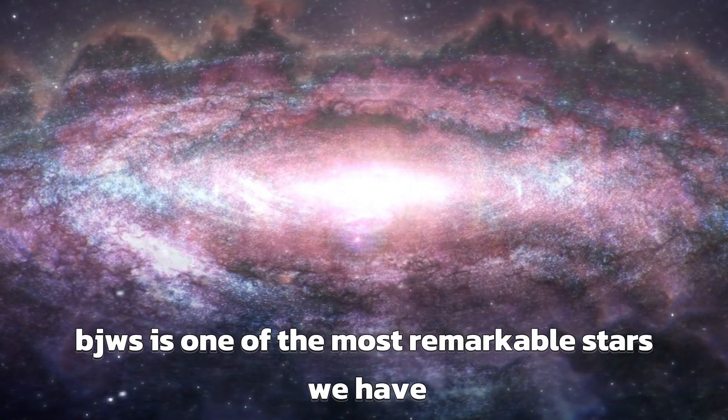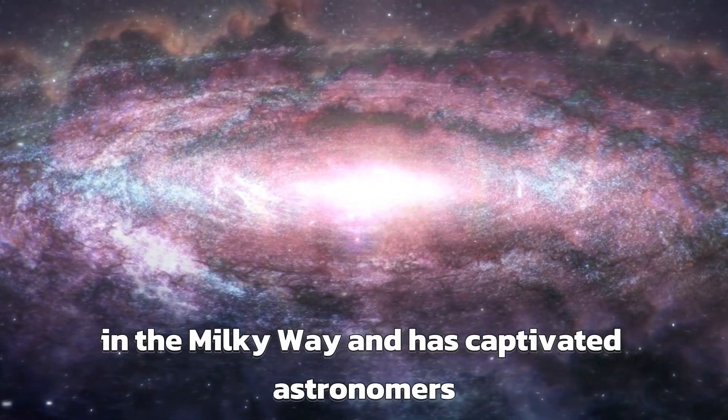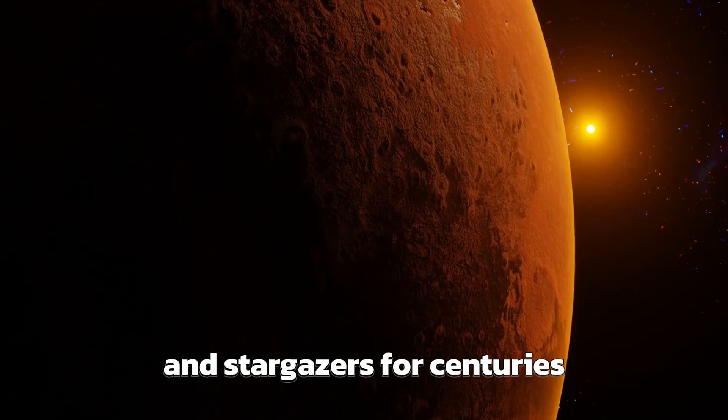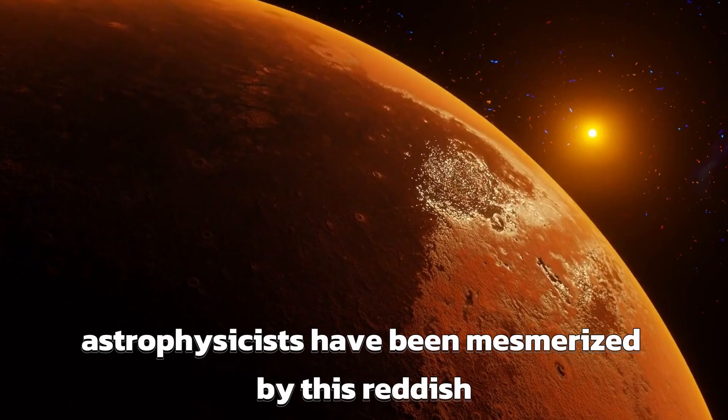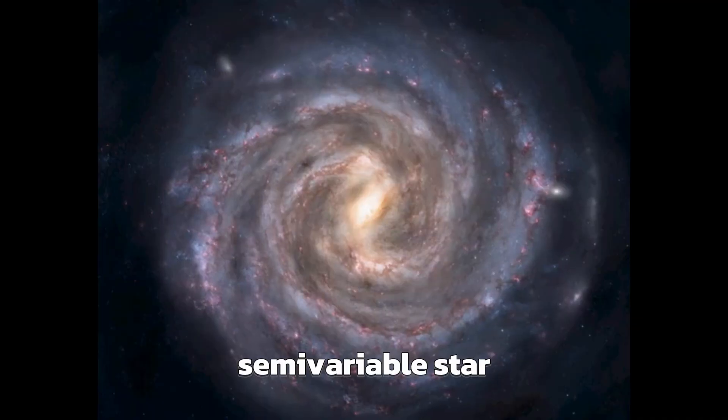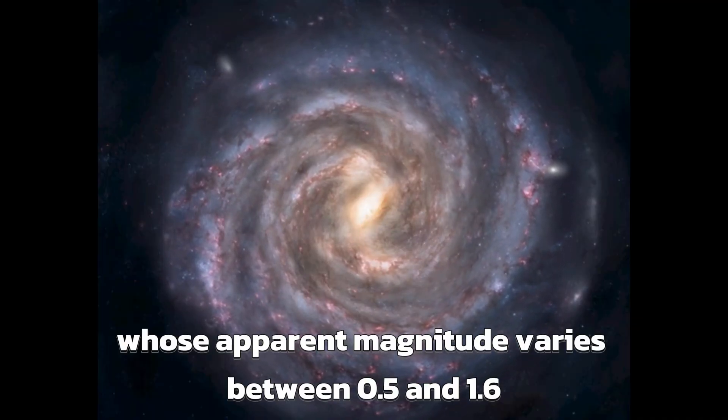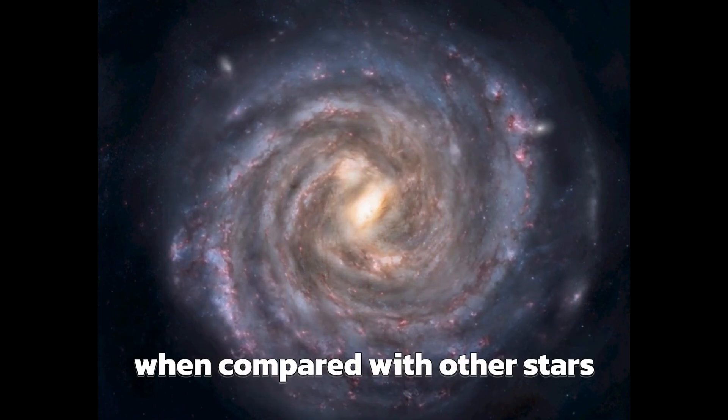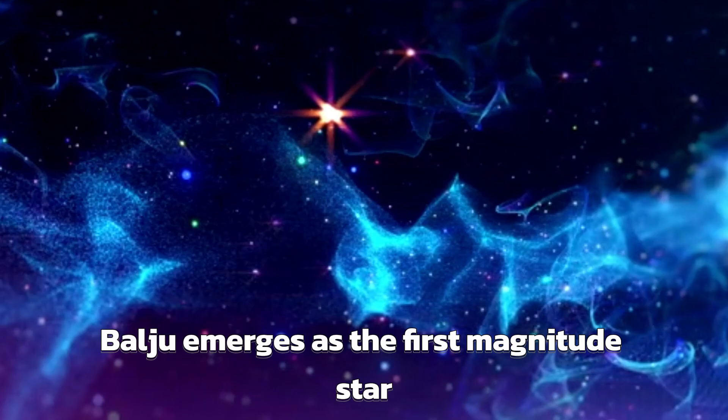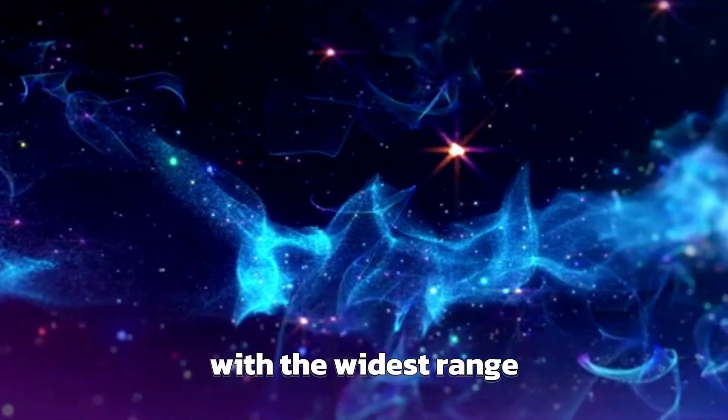Betelgeuse is one of the most remarkable stars we have in the Milky Way and has captivated astronomers and stargazers for centuries. For a long time, astrophysicists have been mesmerized by this reddish semi-variable star, whose apparent magnitude varies between 0.5 and 1.6. When compared with other stars, Betelgeuse emerges as the first magnitude star with the widest range.